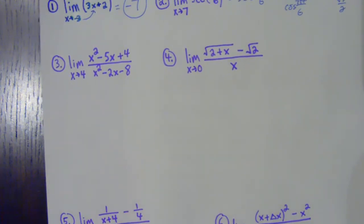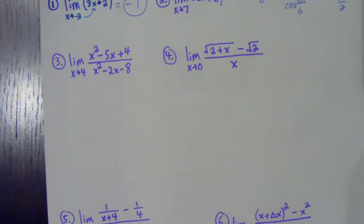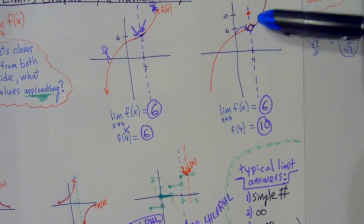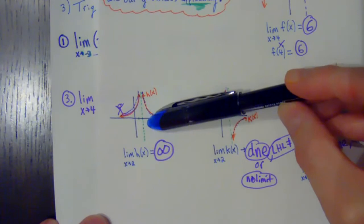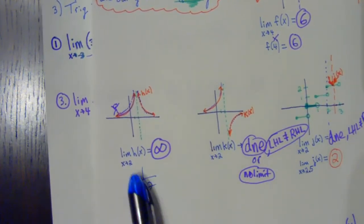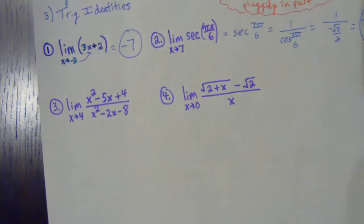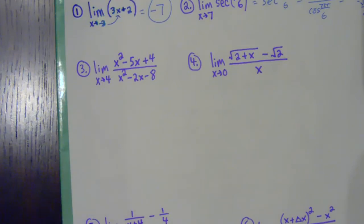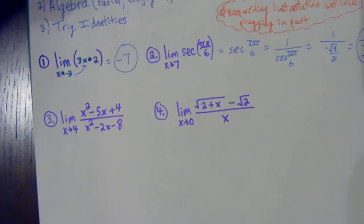You get zero on the bottom as well. Somebody told you before that when you get zero on the bottom, that's always undefined. But you've got zero on top and zero on bottom — you can't be zero and undefined at the same time. Calculus actually allows us to divide by zero, but we're not ready for that yet. Just because a function is undefined — if you're getting zero in the denominator — doesn't mean the limit doesn't exist. That's why justification is always very important in this class.